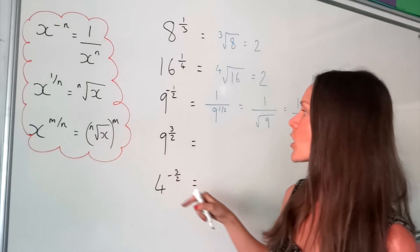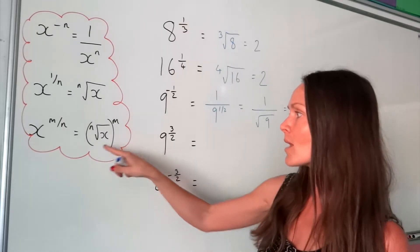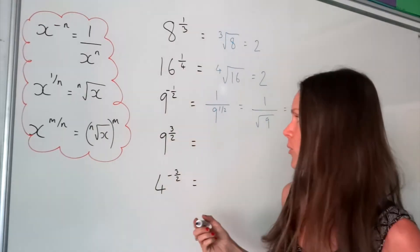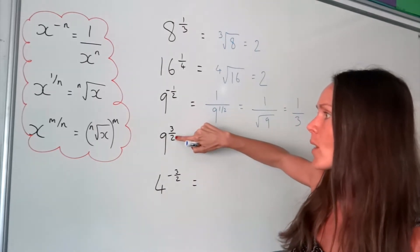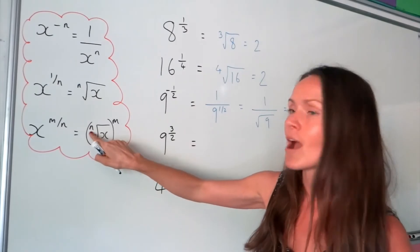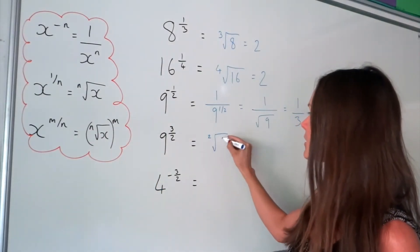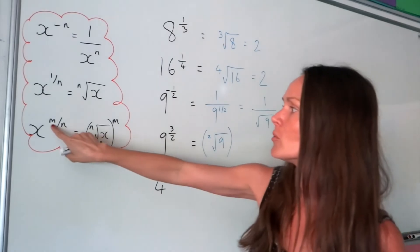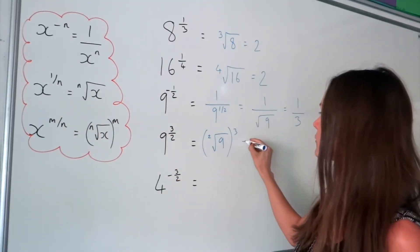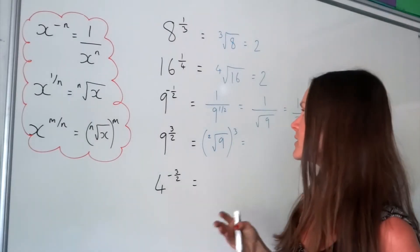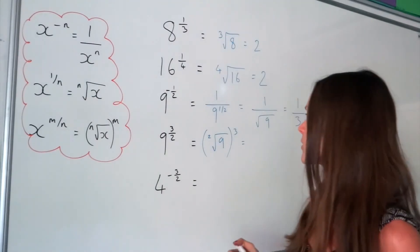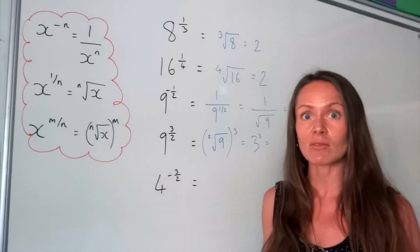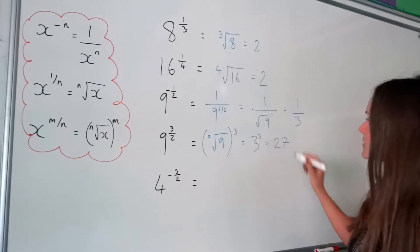Now for the last rule: a fractional power where the numerator is not 1 means rooting and then raising to a power. Take the denominator first — it tells you how to root the number. We're square rooting 9, and the square root of 9 is 3 (there are two solutions, positive and negative, but I'll use positive). Afterwards, the numerator tells you what to do: we cube 3. Three times 3 times 3 is 27, so the final answer is 27.